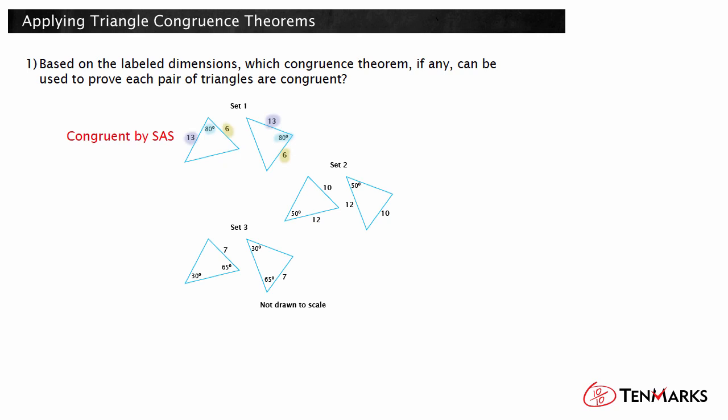The triangles in set 2 also have two sets of congruent sides and a pair of congruent angles. However, the angles are not in a place that matches one of the congruence theorems. There is not a side-side-angle congruence theorem, and we have no other information about the triangles, so we cannot say for sure if the triangles are congruent.